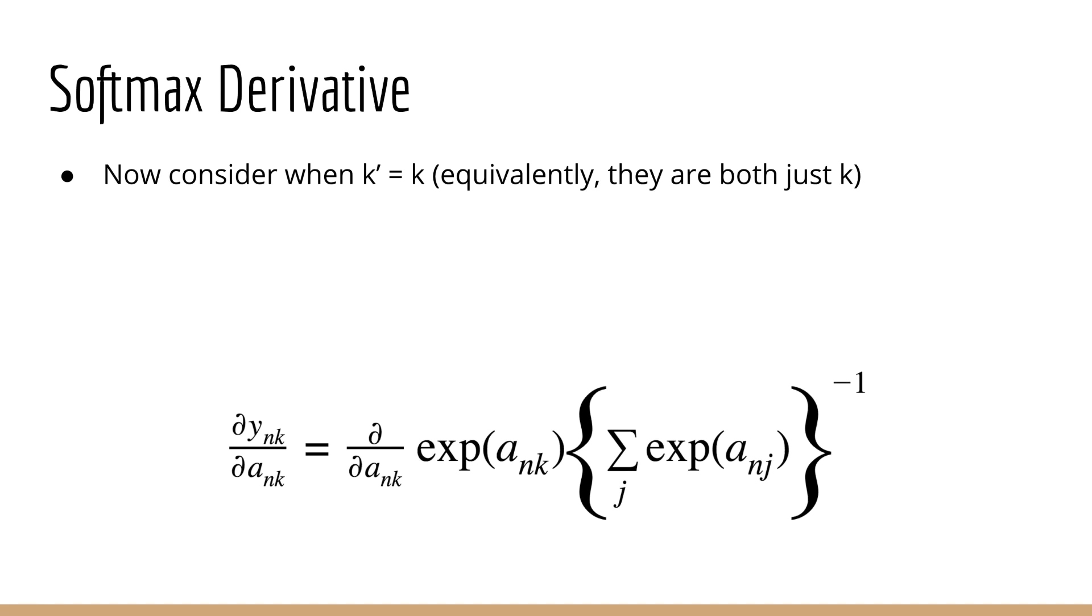Next, let's consider the case where k prime is equal to k. In this scenario, we can just replace k prime with k since they are both the same. Now we can see that both terms depend on a and k, so we have to differentiate both and apply the product rule.